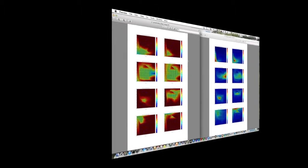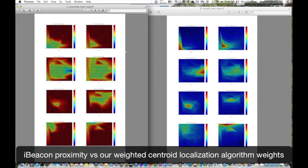In the next comparison you see the proximity computed by beacon and our weights, and you see that the proximity is really not helpful.